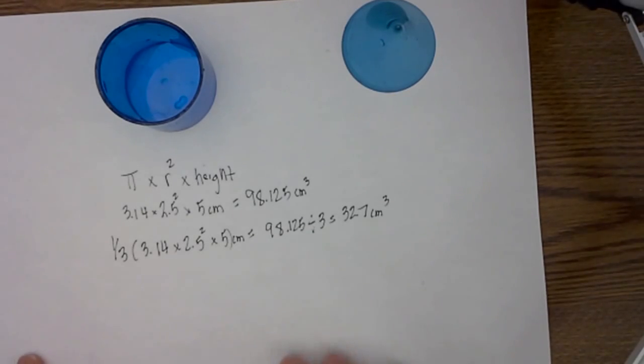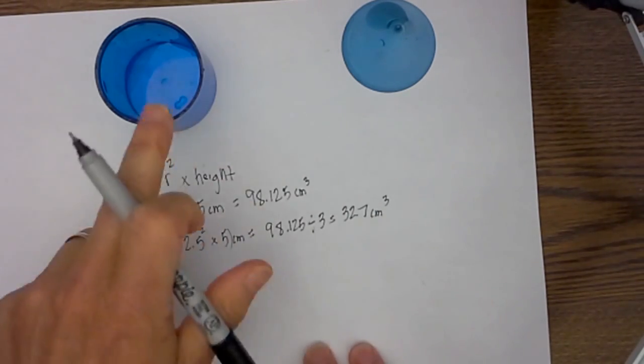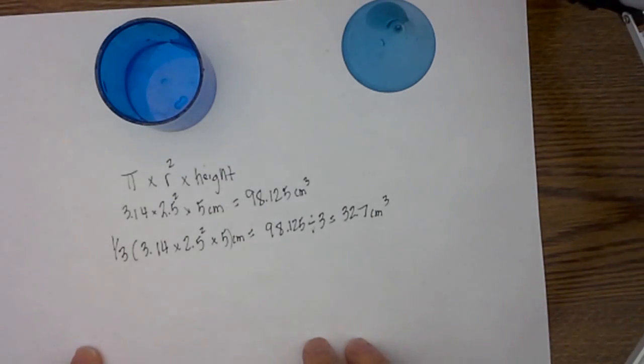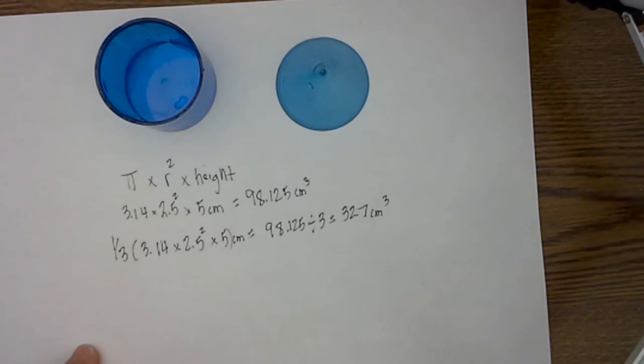So that is what it looks like mathematically, the cone is one third of the volume of the cylinder. Now let me go ahead and fill these objects up with water and see if we can prove that.